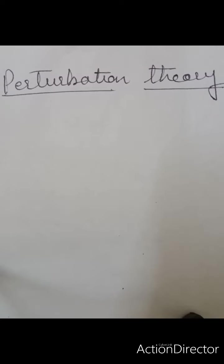Today I will be discussing another approximation method: perturbation theory. In our previous video we covered the variation theorem, which was the first approximation method. Perturbation theory is again used for complicated systems which have more than one electron. This method is based on the principle that the actual problem will be treated as a slight modification or disturbance in the system.